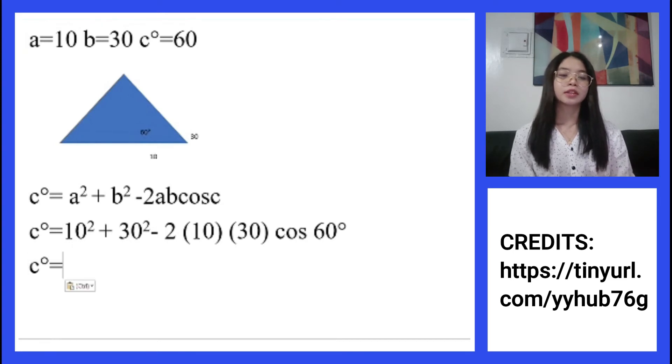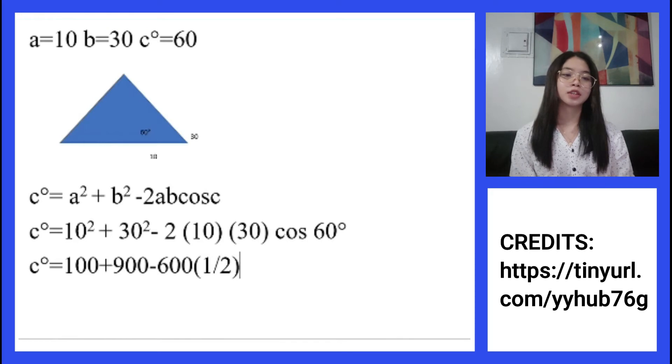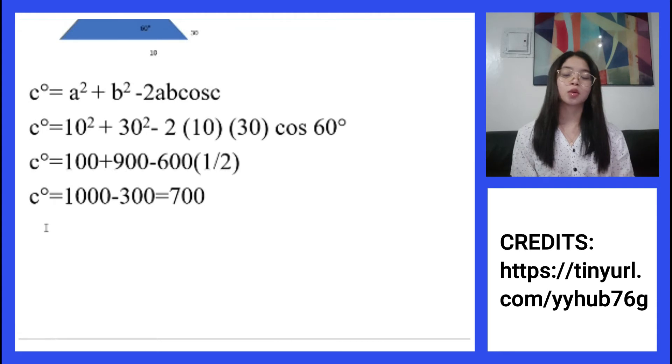10 squared is 100, 30 squared is 900, and 2 times 10 and 30 equals 600. Cosine of 60 is 1 half. 100 plus 900 equals 1000, and half of 600 is 300. 1000 minus 300 is 700, so c squared equals 700. We get the square root of both sides and get the answer of 26.46.